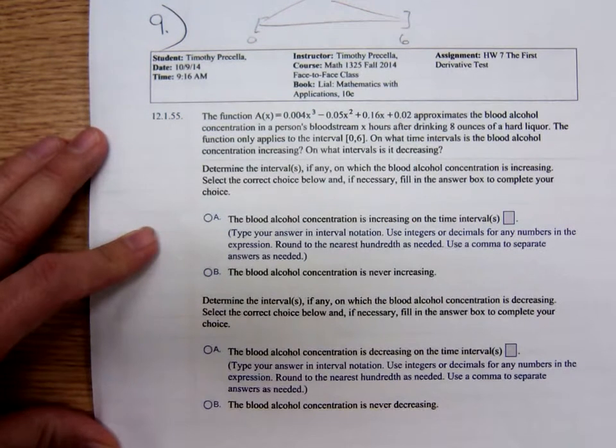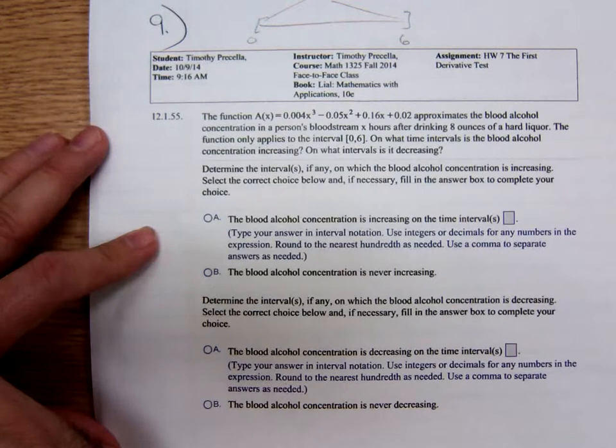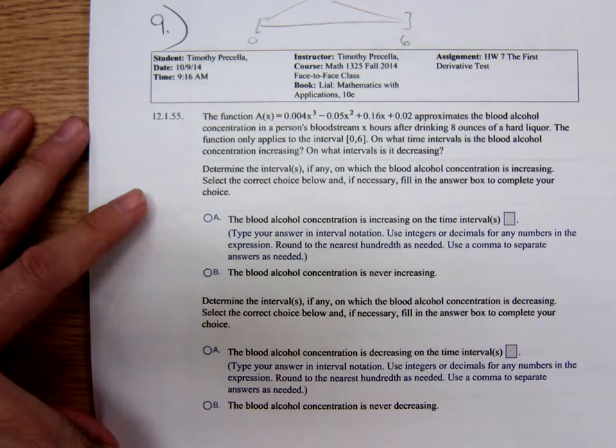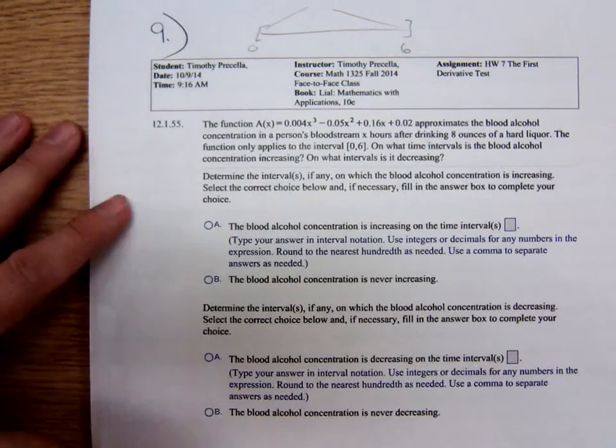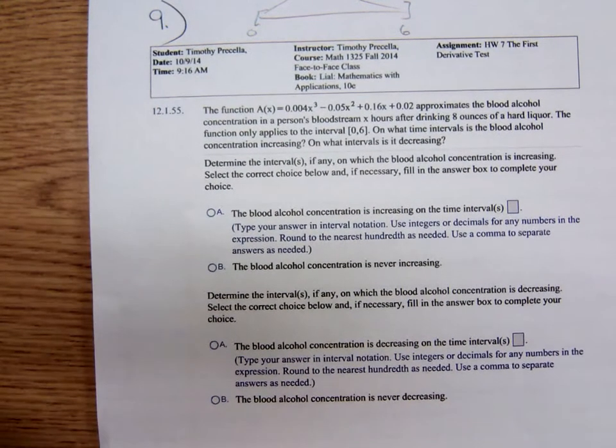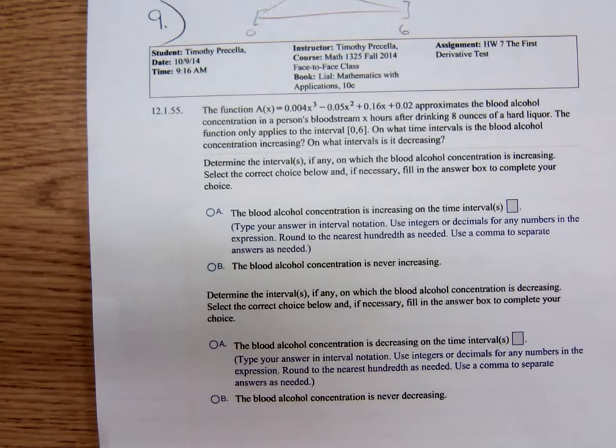Make sense? It doesn't start decreasing and then somewhere along the way change and start back increasing. Think of it as you drink it all at one time. I know that's a big shot, eight ounces of hard liquor. Y'all understand the problem? Okay, so here's our function.